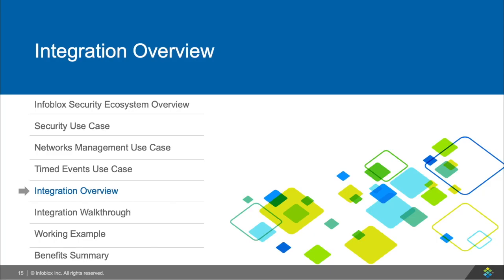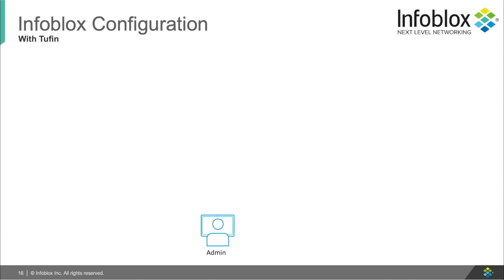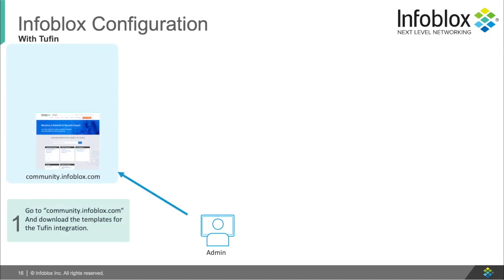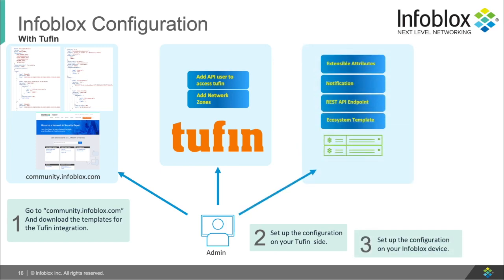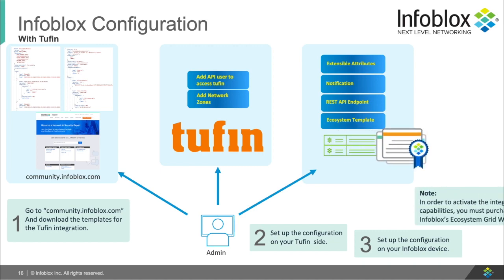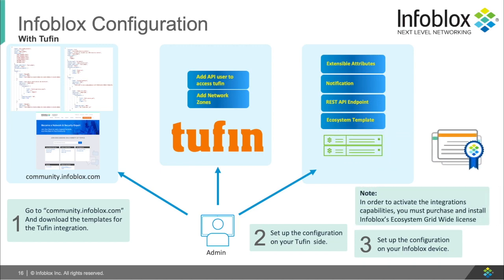Now let's see how to set everything up. First, you'll want to go to community.infoblox.com and download the templates for the Tuffin integration. Second, you'll want to create zones on the Tuffin appliance and create a user with permissions. Finally, you'll want to set up your Infoblox grid with the integration: add some extensible attributes, then add the templates, add the endpoints, and finally add the notifications. For a final note, you'll want to purchase and download Infoblox's ecosystem GridWide License in order to activate the integration's capabilities.